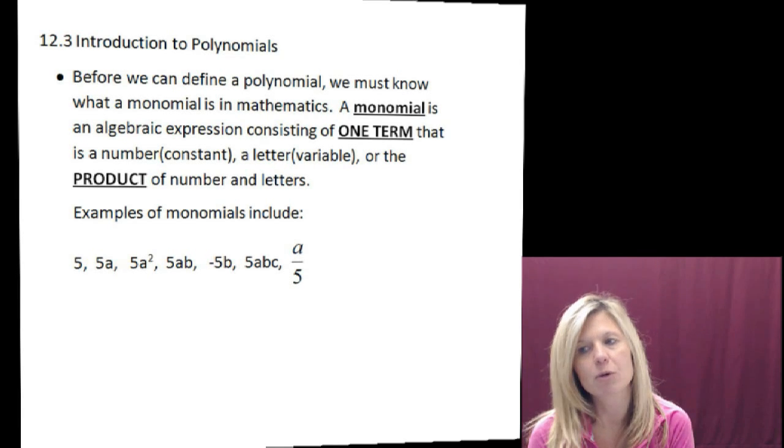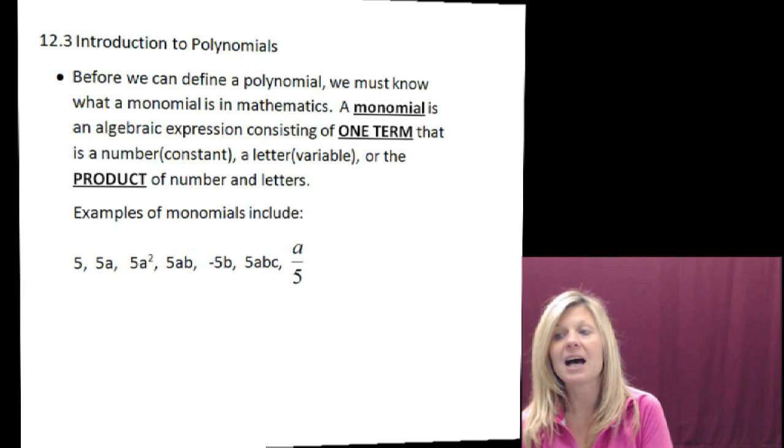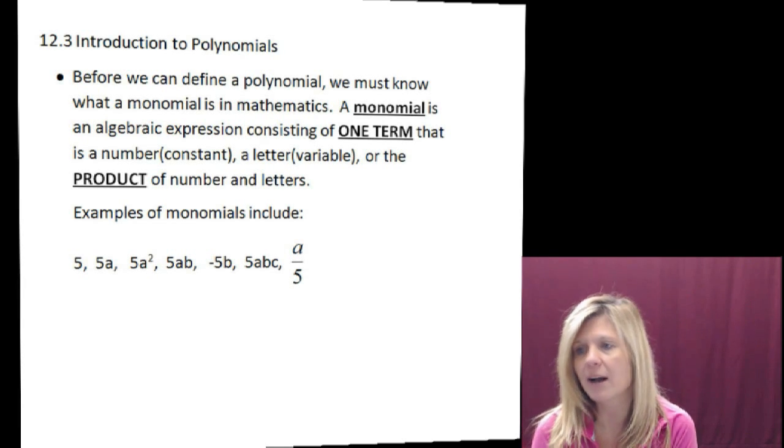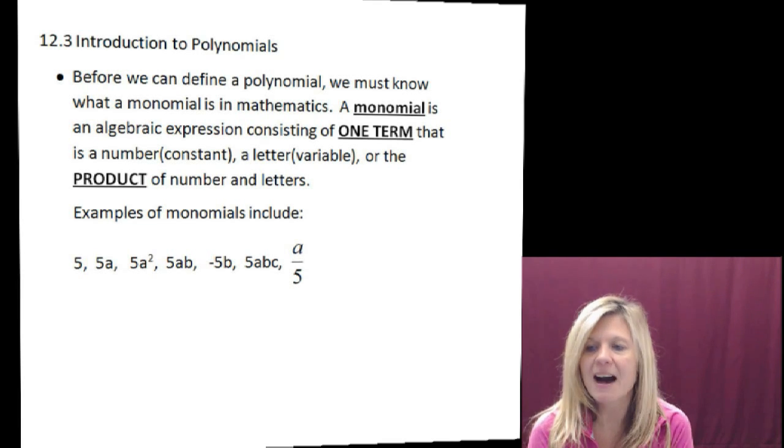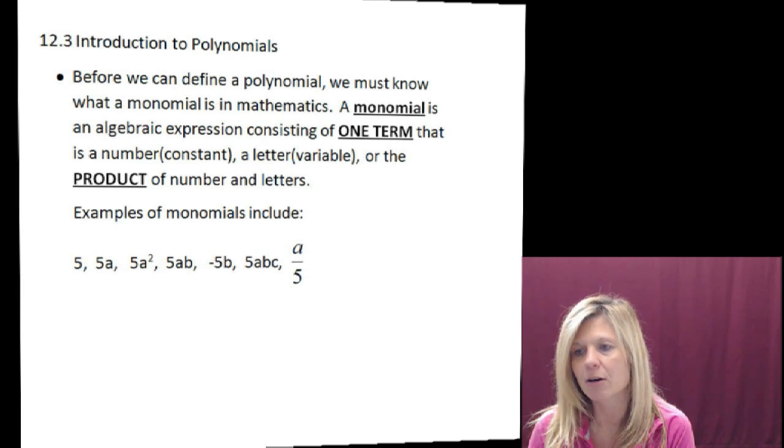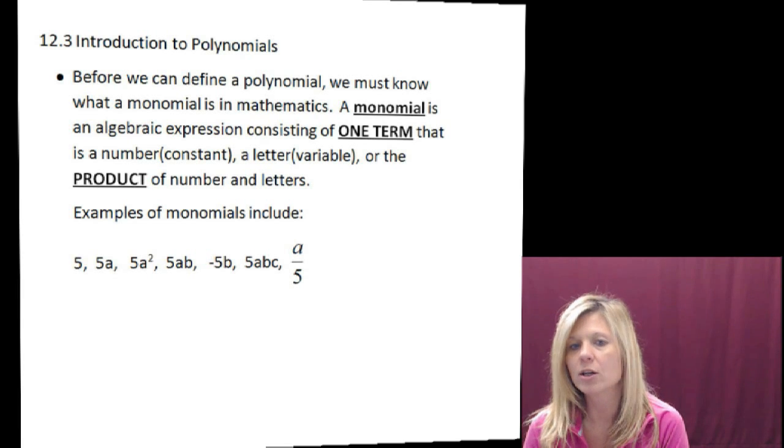In Algebra we talk about putting together terms. A term is either a number, for example 5, a letter, for example the letter A, or a product of a number and letter. Remember the word product means to multiply. So if you look at 5A, which is 5 times A, that's a number and letter side by side connected by multiplication. We would call that one term.